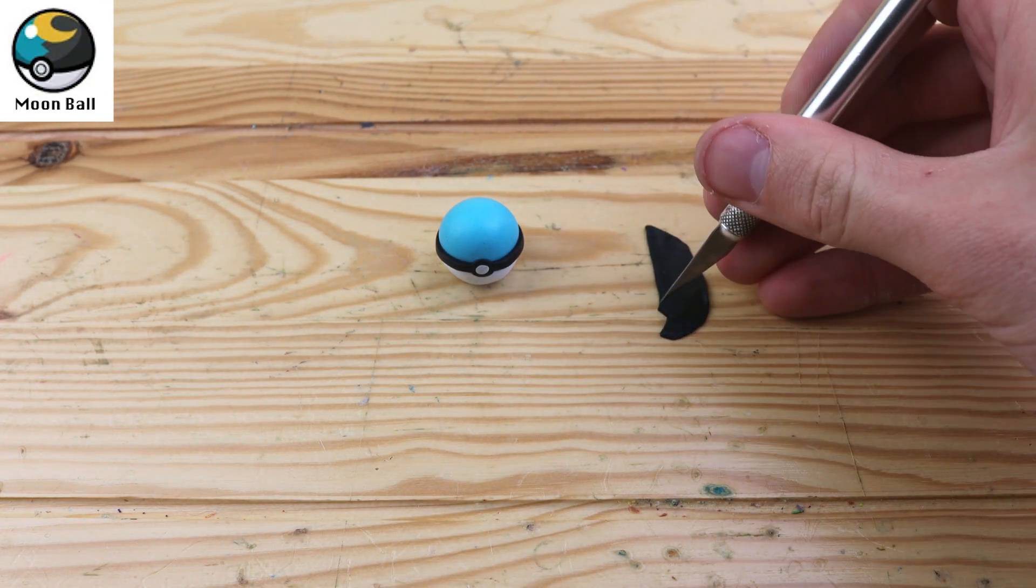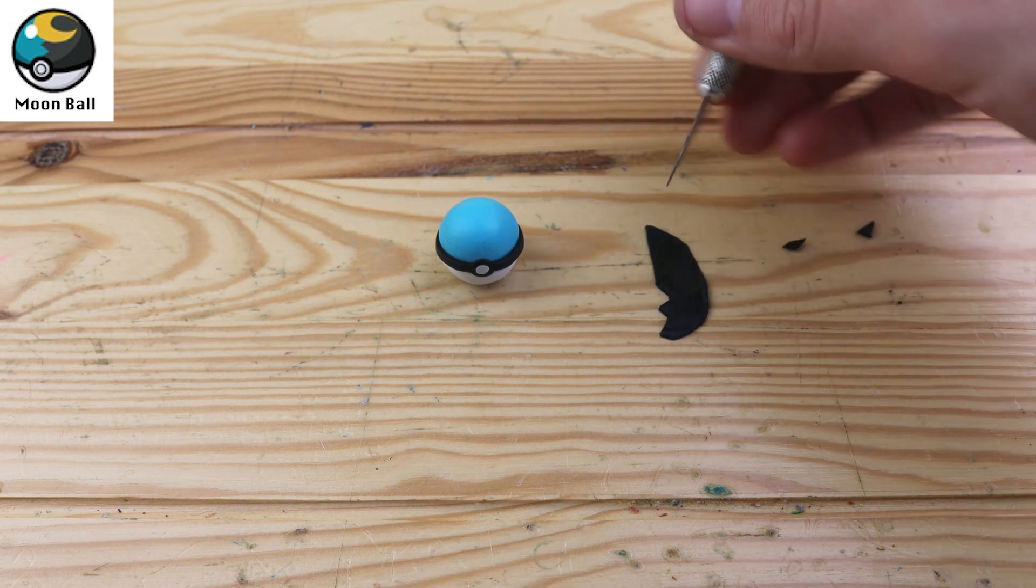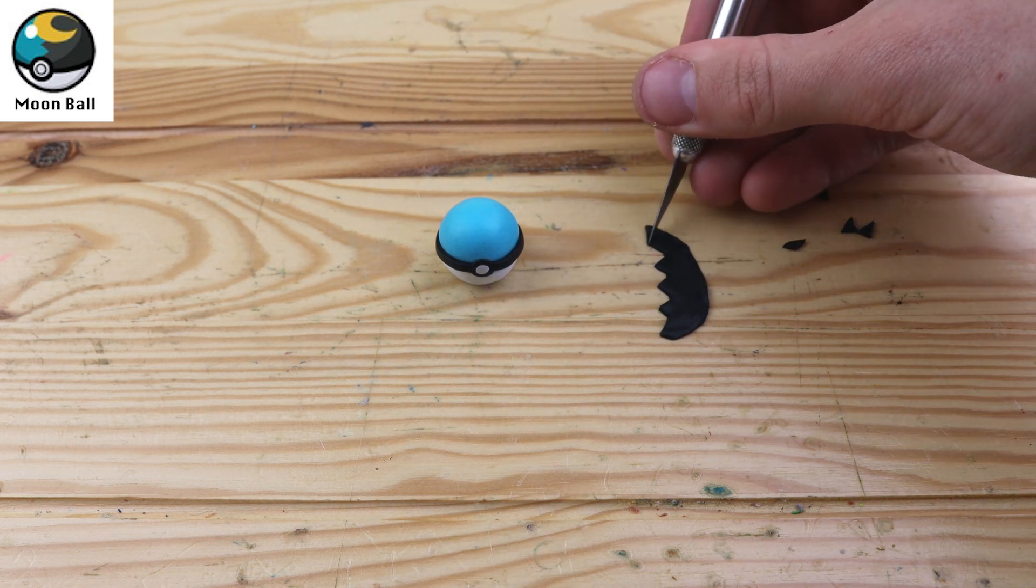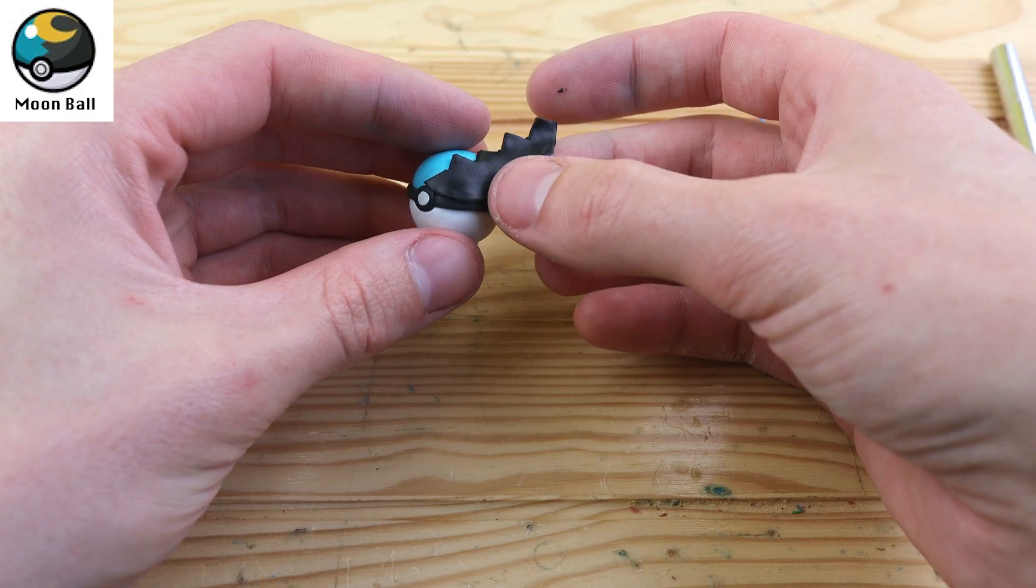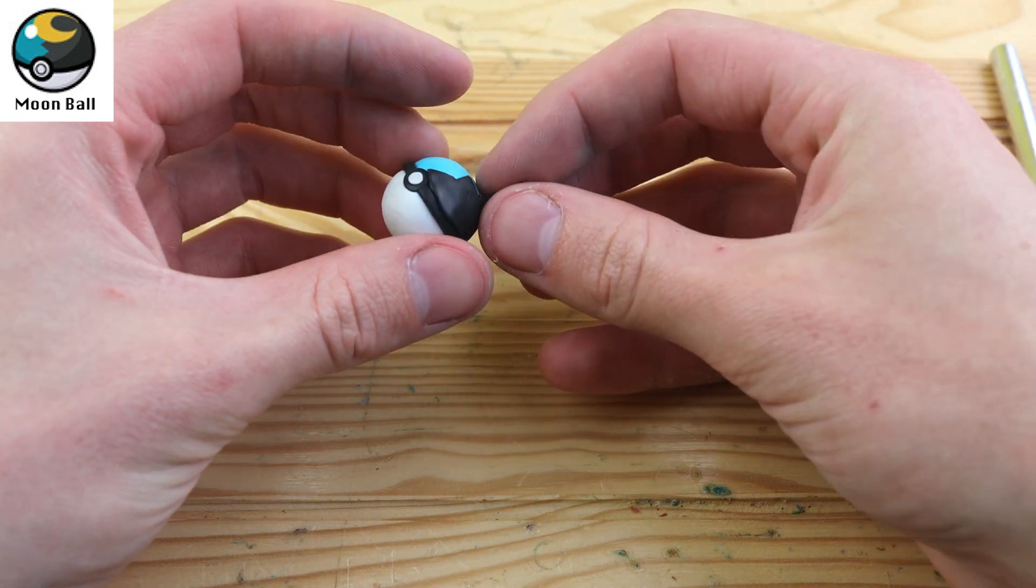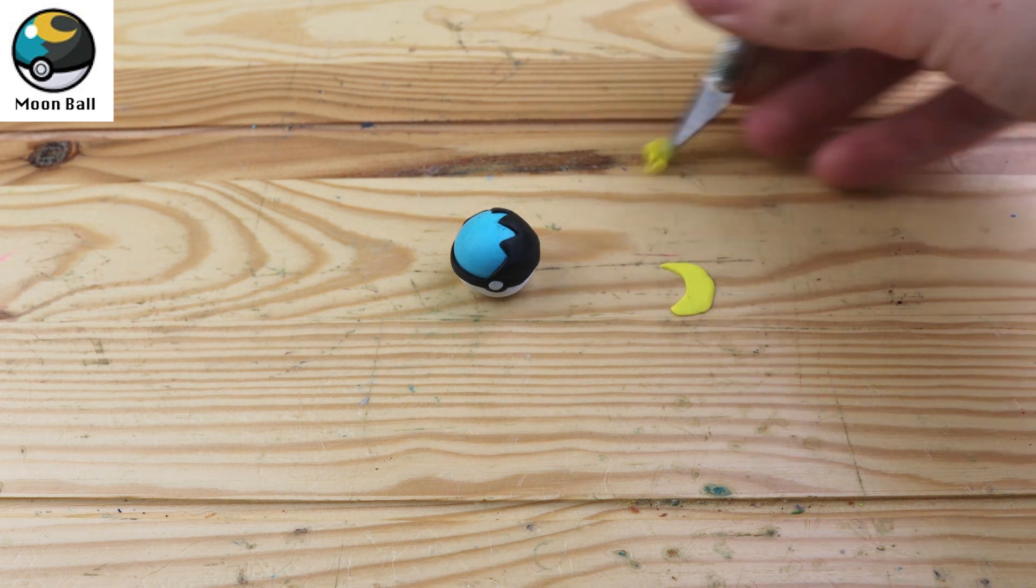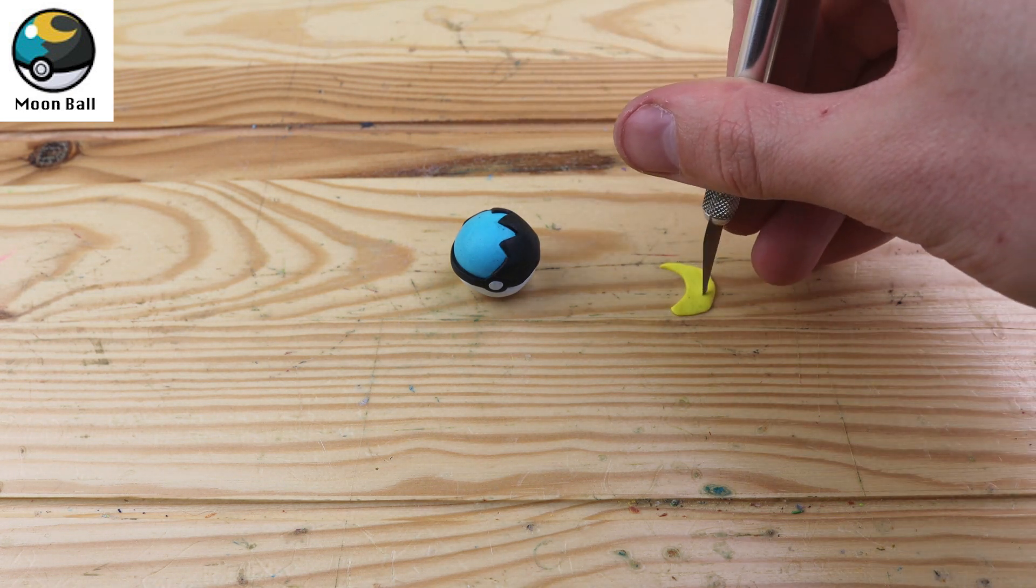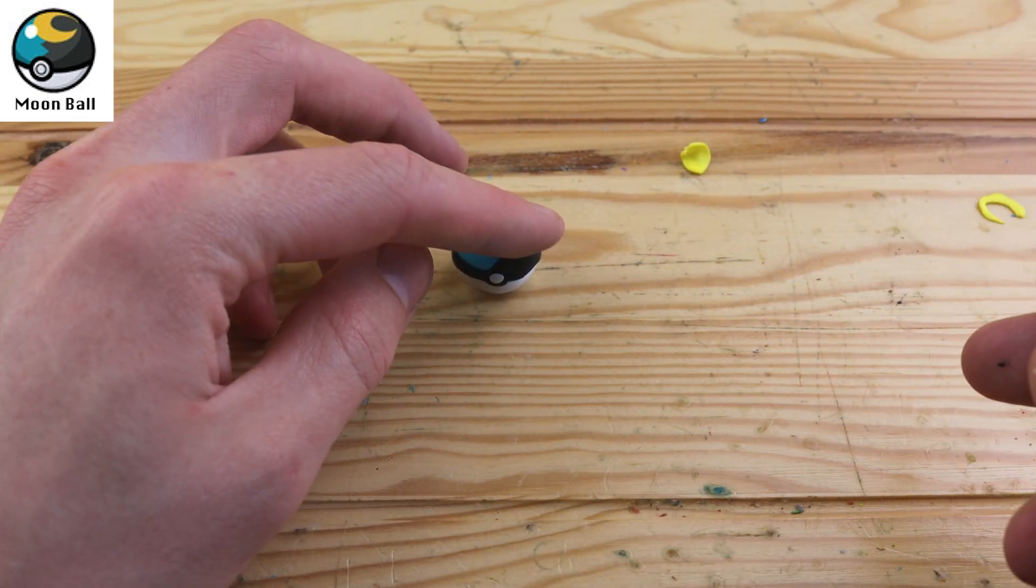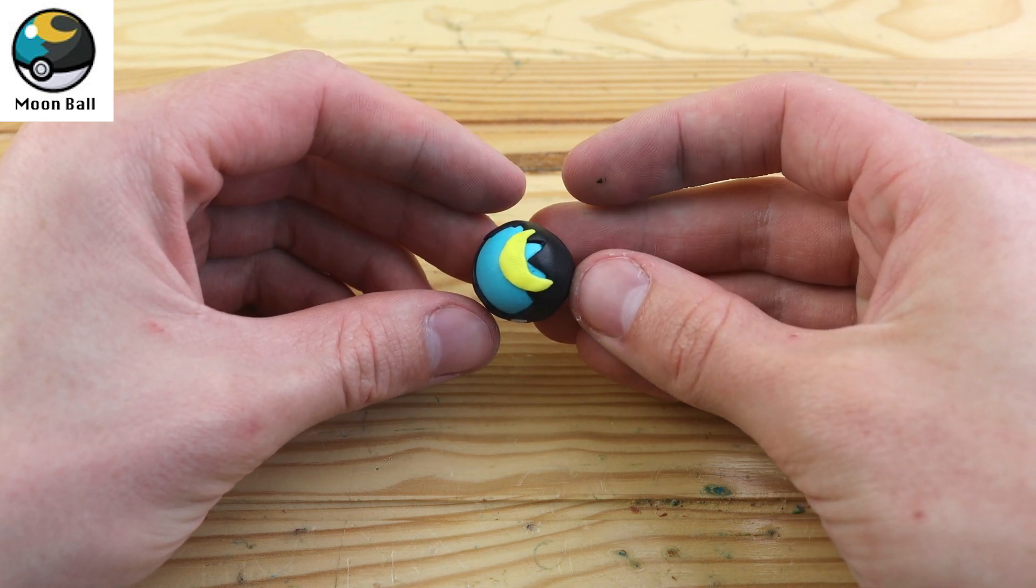The Moon Ball. This one took a little bit of thinking to try to figure out how to make this top pattern, but I think this should work out pretty good. This Pokéball is more likely to succeed against Pokémon that evolved by using a Moonstone. It's a very oddly specific Pokéball, and I don't think you would use it very often, but it's nice to have some variety. We have to create a little moon on the top.